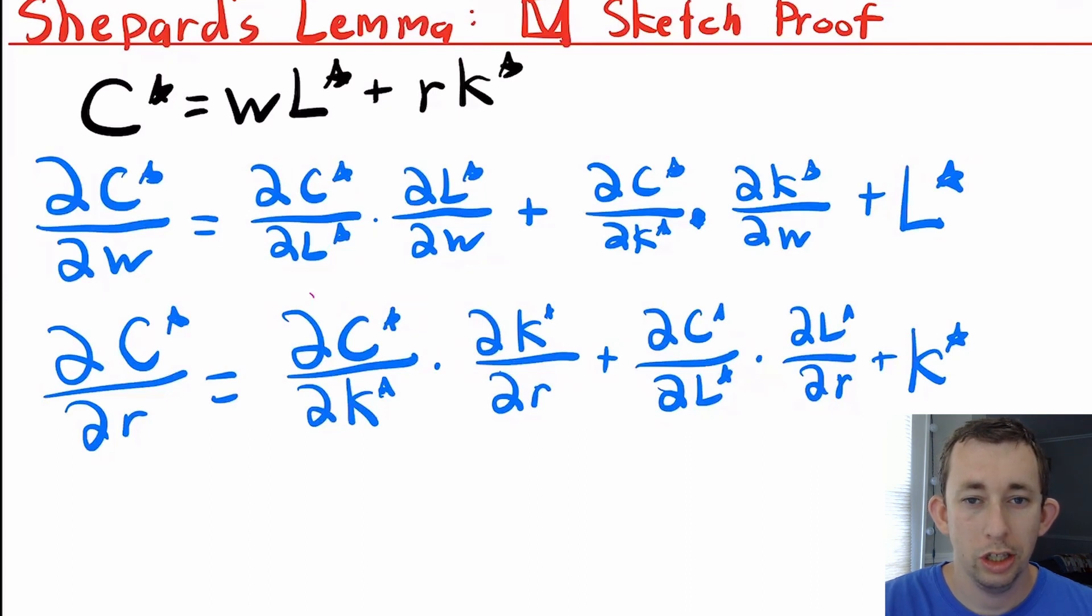And we're going to show that if you take the derivative of your cost function, which is the value function of the cost minimization problem, with respect to an input price, you are going to get back the conditional factor demand for the optimal input amount of that good. So just to show you how it works, here's our cost function just generally with two inputs.